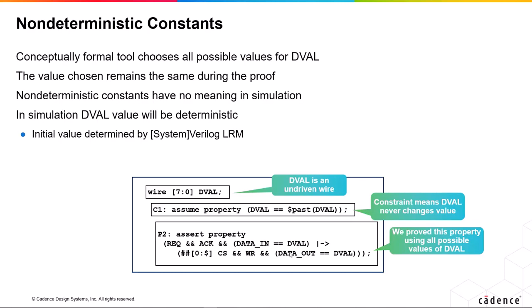then it doesn't appear at the output, the formal tool will show that in a counterexample. We can't hide bugs with this. So this is a very commonly used technique in formal.